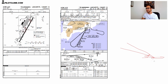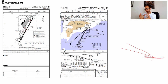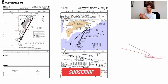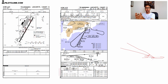Let's say the PAPIs are set to four degrees — they give you information about that descent angle. If you maintain two whites and two reds all the way down, that means you are flying the four-degree path. However, if you fly a three-degree ILS glideslope, you will be below the PAPI descent angle indication. So even though your glideslope is centered, you will still see three reds and then four reds. This is not very common — 99.9% of the time the glideslope and PAPI angles are the same and collocated.